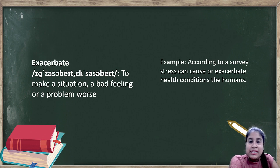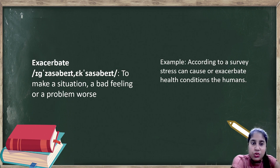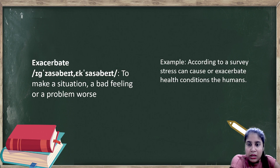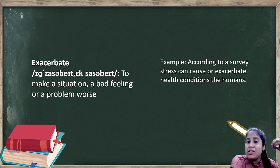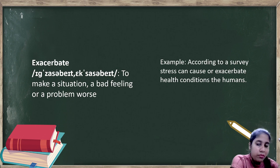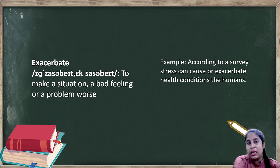The first word for the day is exacerbate. Exacerbate meaning to make a situation, a bad feeling, or a problem worse. The situation was already bad, and exacerbate means to make that situation even worse. Example: According to a survey, stress can cause or exacerbate health conditions of the humans. In this sentence, stress can make human health conditions worse.